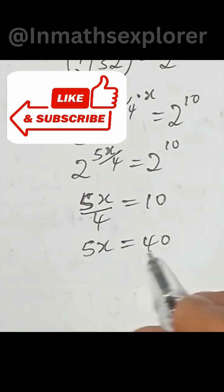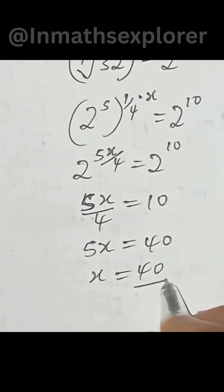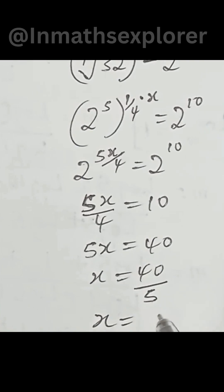Then let's divide both sides by 5. We have x equal to 40 divided by 5. Then x will be equal to 8.